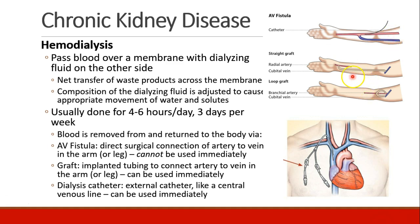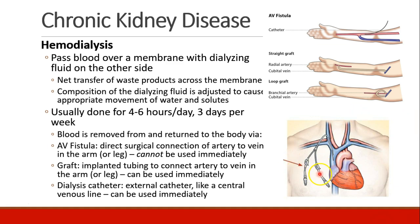Patients may also have a graft, which is tubing implanted from the artery to the vein or as a loop between them. These can be used immediately after surgery. Two needles are placed — one for withdrawing the blood and the other for putting it back in. Patients may also have an external dialysis catheter, which is like a central line, usually just in the vein, and these can also be used immediately after placement.